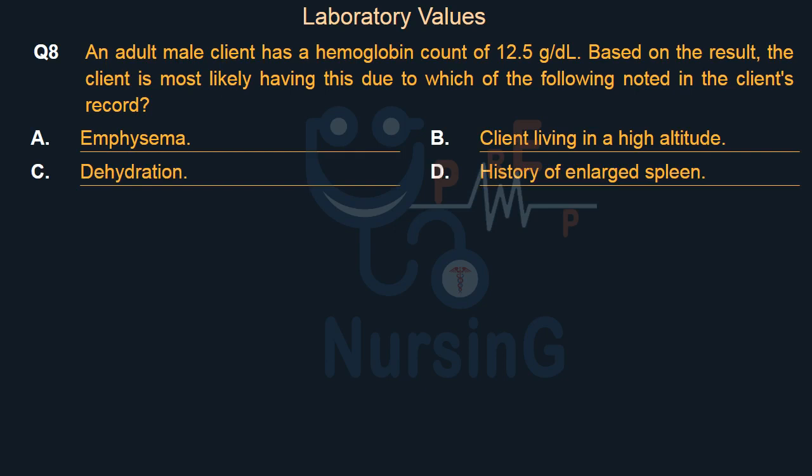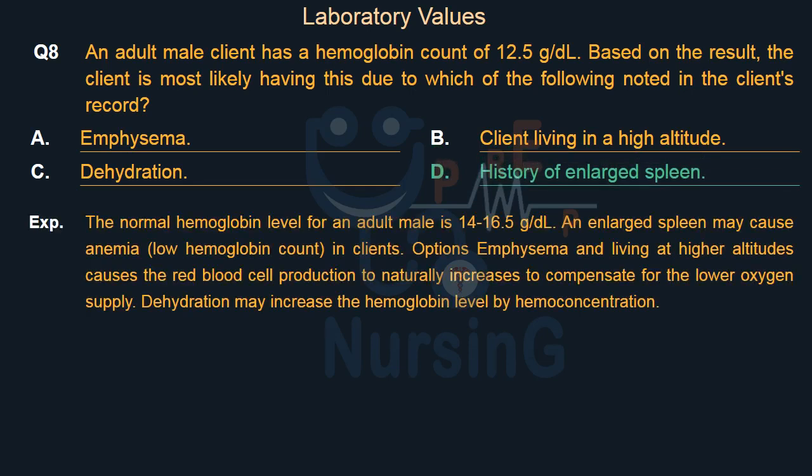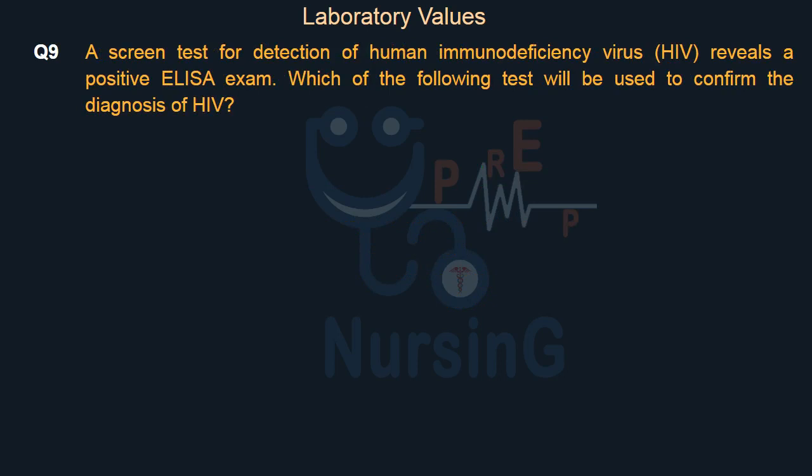The right answer is Option D: History of enlarged spleen. The normal hemoglobin level for an adult male is 14 to 16.5 g/dL. An enlarged spleen may cause anemia and a low hemoglobin count in clients. Emphysema and living at higher altitudes cause red blood cell production to naturally increase to compensate for the lower oxygen supply. Dehydration may increase the hemoglobin level by hemoconcentration.